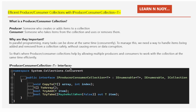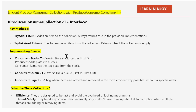Let's look at the structure of the IProducerConsumerCollection<T> interface, defined in the System.Collections.Concurrent namespace. It provides a couple of key methods: CopyTo, ToArray, TryAdd, and TryTake. Let's discuss these key methods and the implementing classes.